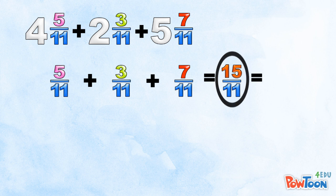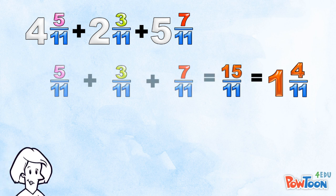We have to make a mixed number. How many 11s in 15? There's one whole group of 11 and a remainder of 4. Put that over our denominator of 11.